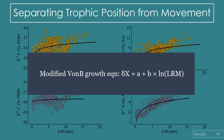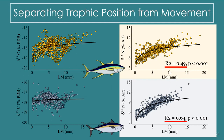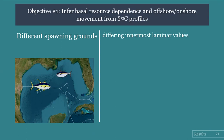To further separate trophic position increase from movement, we used a modified von Bertalanffy growth equation. The assumption is that the data will fit the growth curve better in a fish that is only increasing in trophic position and not moving. For delta carbon, both species show a very weak fit that is still significant. For delta nitrogen, the fit is much better for both species — particularly for blackfin tuna, where it is a really good fit.